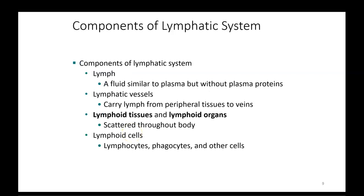Components of the lymphatic system include lymph, which is going to be the fluid similar to plasma but without the plasma proteins — so if you're asked the difference between plasma and lymph, it doesn't have the plasma proteins. Lymphatic vessels run along the veins and arteries, but carry lymph instead of blood, transporting it from peripheral tissues back into the venous system. Lymphoid tissues and lymphoid organs are scattered throughout the body. Lymphoid cells include lymphocytes, phagocytes, and other cells found there.